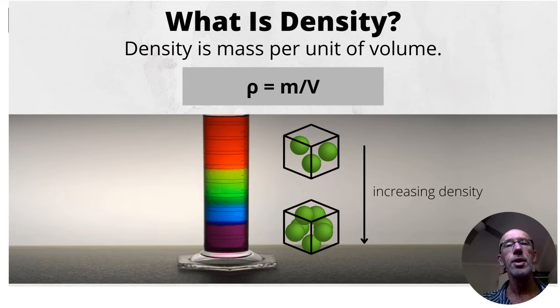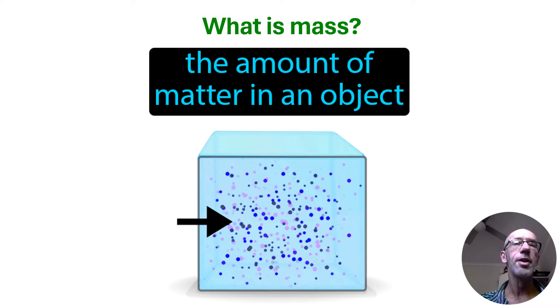So density is simply the amount of matter that fits in a finite space. And when we talk about density, there are two variables that come into play.